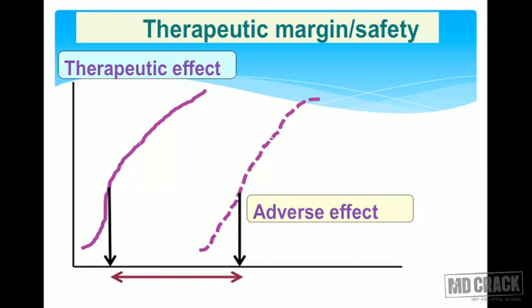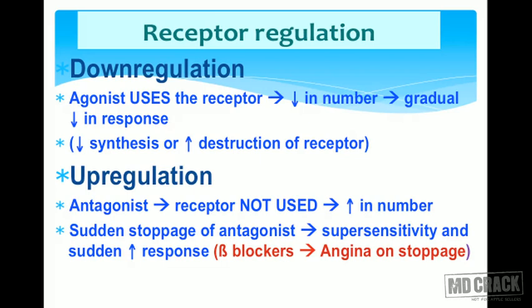We can also draw two dose-response curves for the same drug — one for the therapeutic effect and one for the adverse effect. If these two curves are far apart, there is a wide margin of safety and the drug has a large therapeutic index. If the curves for therapeutic and adverse effects are close together, the drug has a narrow margin of safety.